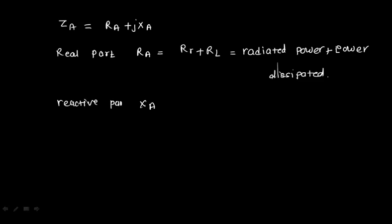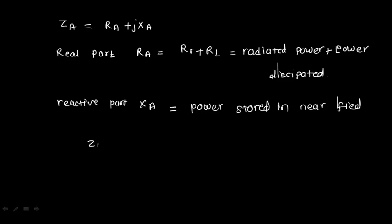The reactive part Xa represents power that is neither dissipated nor radiated — it is stored. This reactive representation shows the power stored in the near-field region. So Za is the antenna input impedance, where Ra is the real part (Rr + Rl) and Xa is the reactive part representing the input reactance of the antenna.